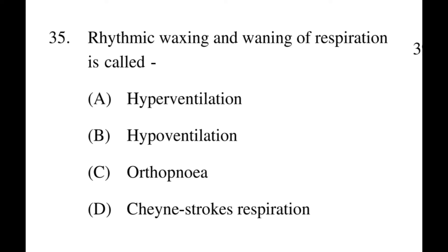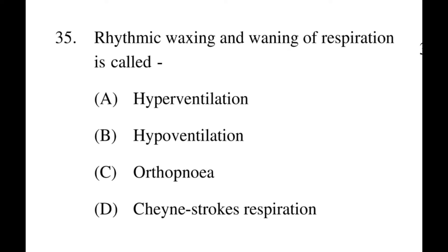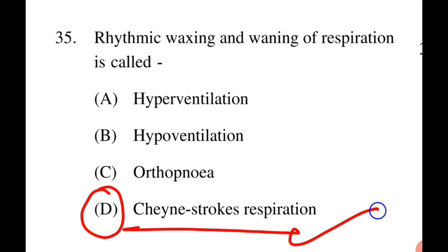Next question: Rhythmic waxing and waning of respiration is called? Options: A: hyperventilation, B: hypoventilation, C: orthopnea, D: Cheyne-Stokes respiration. The right answer is D, Cheyne-Stokes respiration. The patient slowly begins to breathe, then gradually increases to deep breathing, then pauses — that is Cheyne-Stokes respiration.